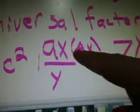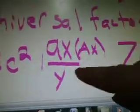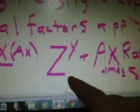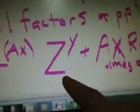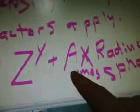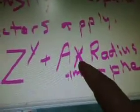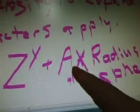It's supposed to be just one AX, not two — I was trying to draw it. AX over Y, Z to the power of Y plus A, A times the radius of sphere. Pythagorean theorem. Jet propulsion. Travel line of light.